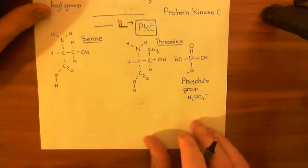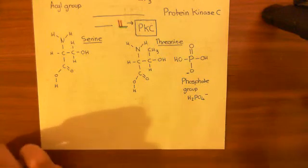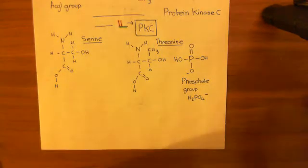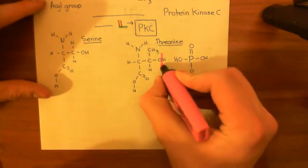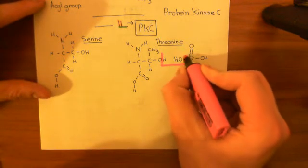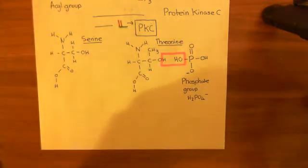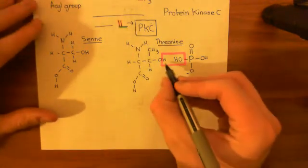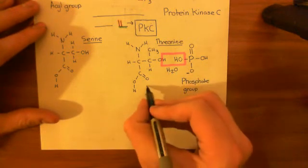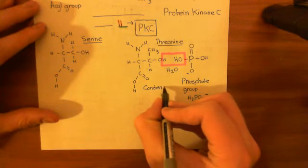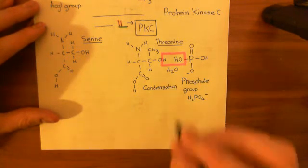Okay, right. So what's going to happen is you can add this phosphate group onto the hydroxyl group of the serine and threonine amino acids. So you can remove the hydrogen off the alcohol group of the amino acid and the whole hydroxyl group off the phosphate group. And you combine these together to make water. Now, this is why this sort of a reaction is known as a condensation reaction, because it produces condensation, basically. It produces water.